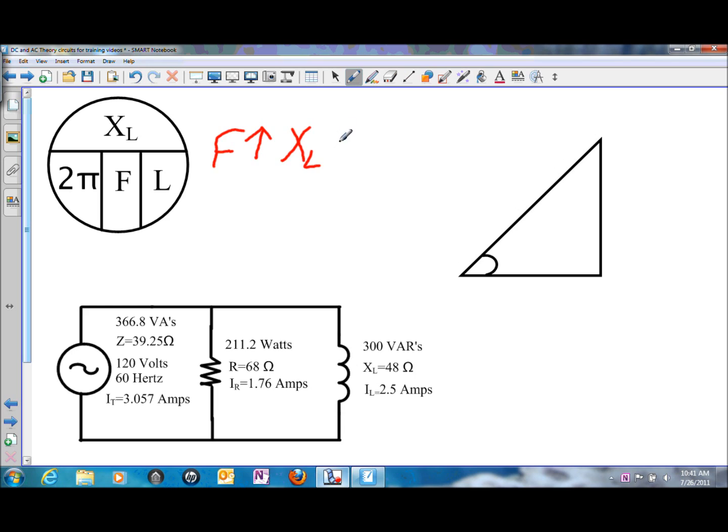If we increase the frequency, then the inductive reactance also will increase. So if the overall opposition to current flow increases, then the current flow must also decrease. Total current flow. So if we have X amount of current at 60 Hz and we increase the frequency and the inductive reactance goes up, then the total current flow is going to decrease to some value.